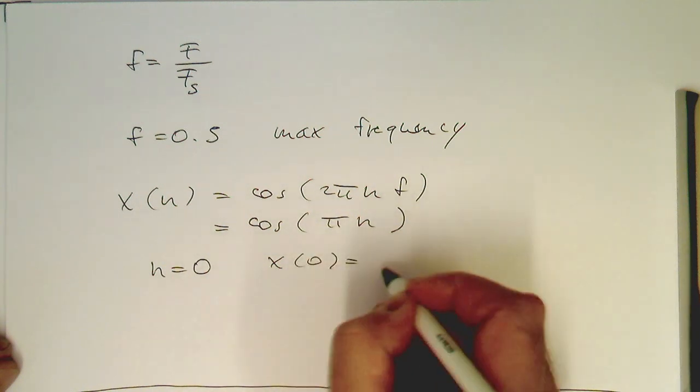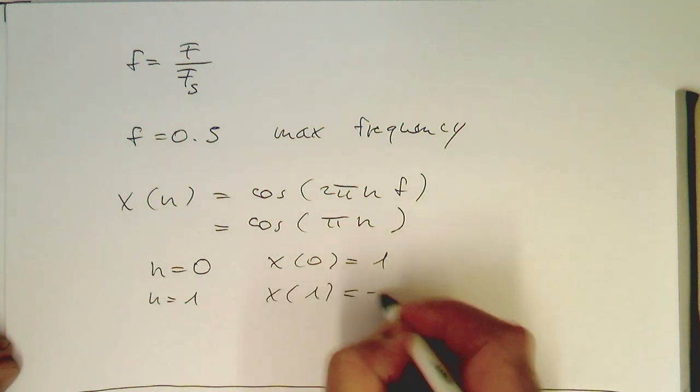Our x, so x of 0 gives us 1. And for n equals 1, this gives us a minus 1.